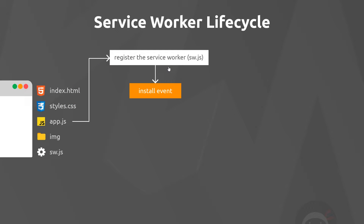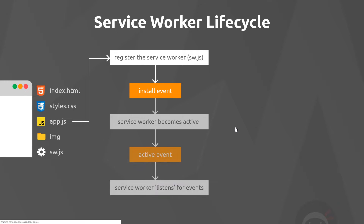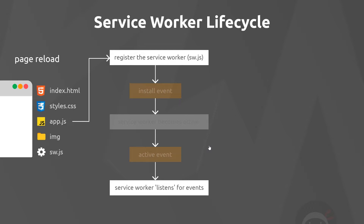We've seen that we've registered a service worker and listened to the install event. The next step is that the service worker becomes active — it fires an activate event, and then the service worker can listen for things like fetch events in the future. This happens automatically the first time a service worker is registered and installed inside a browser, but thereafter every time we change the file and it's reinstalled, we have to do something else to activate the service worker.